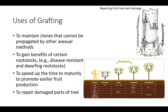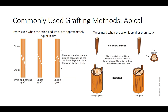Grafting can be used to maintain clones that cannot be propagated by other asexual methods, to gain benefits of certain rootstocks, to speed up the time to maturity to promote earlier fruit production, and to repair damaged parts of trees. Grafting can be classified according to the part of the rootstock on which the scion is placed. The three major categories of grafts are detached scion, approach, and repair grafting.